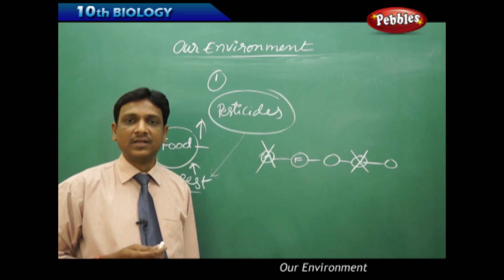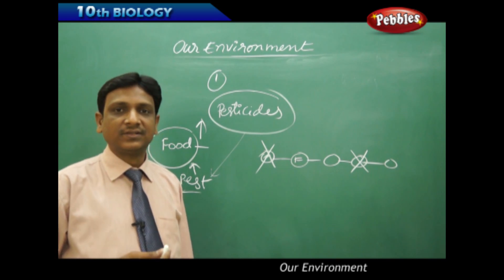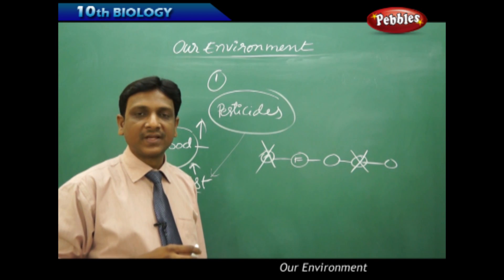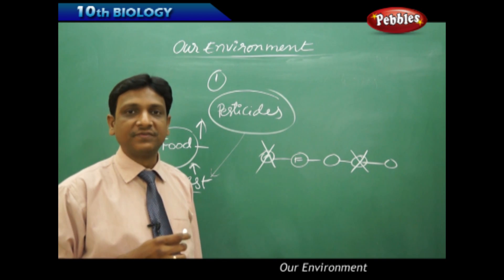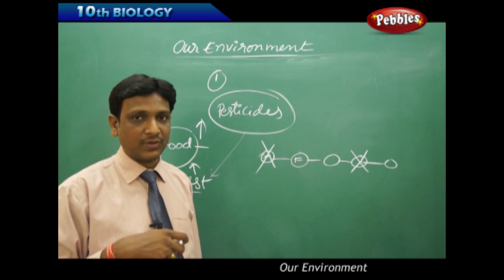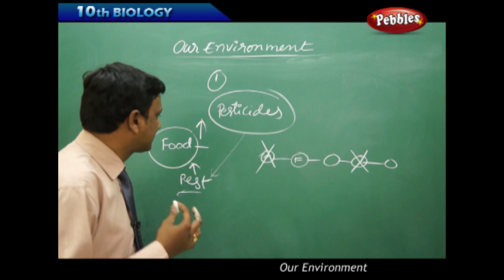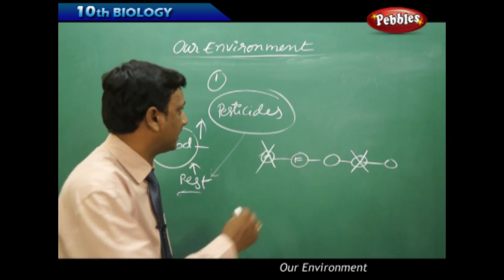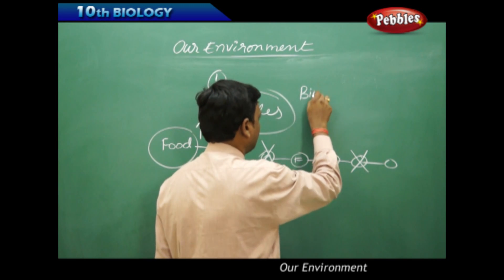If that animal is eaten by some other animal, for example, some fish has eaten grass in contaminated water, the pesticides enter the body of the fish. If you consume the fish, the pesticides may enter our body. This kind of accumulation of pesticides in the bodies of organisms and animals is called bioaccumulation.